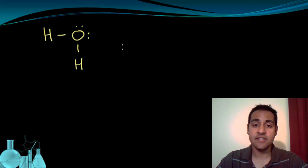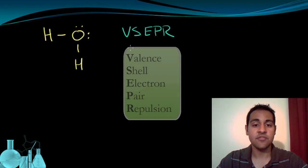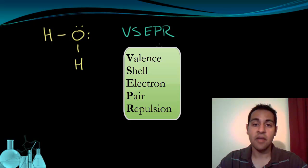There's a way of predicting what the three-dimensional shape is going to be based on a very simple principle, and this theory is called VSEPR, V-S-E-P-R, VSEPR theory. And VSEPR stands for valence shell electron pair repulsion.